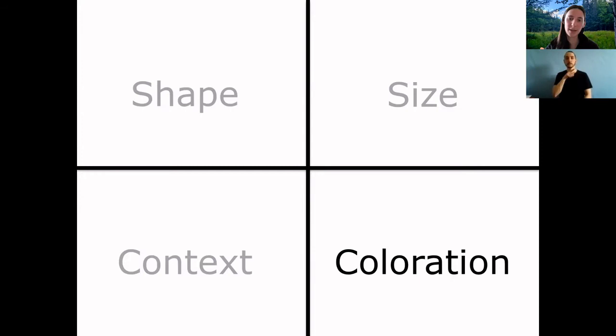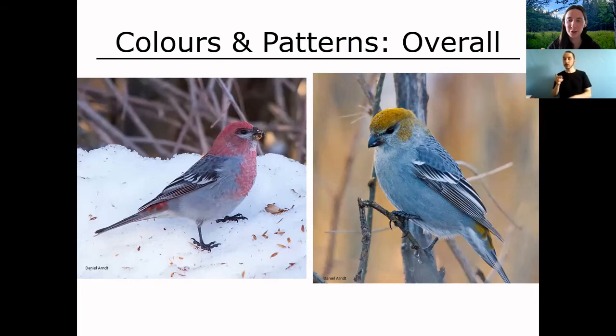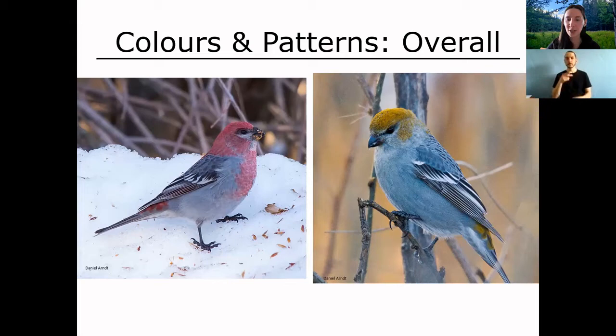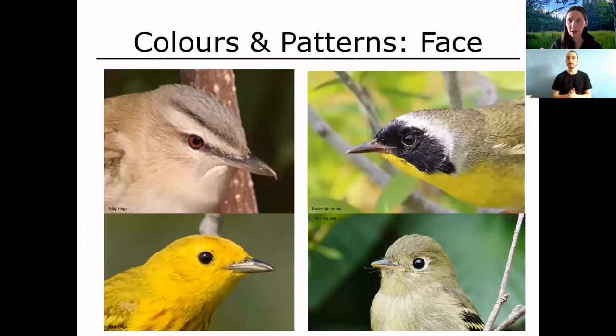Finally, we'll move to coloration — I left this one for last because shape, size, and context are incredibly important. If you rely only on color, you're likely to be misled. For example, here we have two birds in different colors — you might think they're different species, but this is actually the male in red/pink and the female in greenish-yellow of the same species: the Pine Grosbeak. So look at color, but definitely use the other clues too.